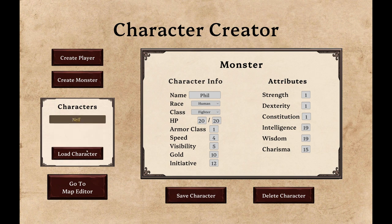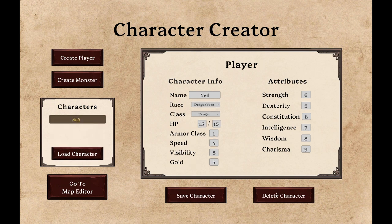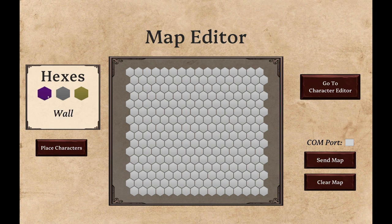If you make a mistake, you can load a character and delete it from the list. We have all the characters, so let's create the map.